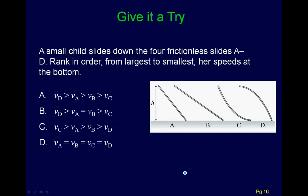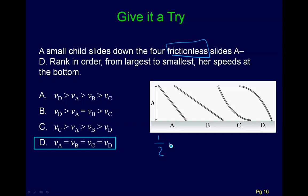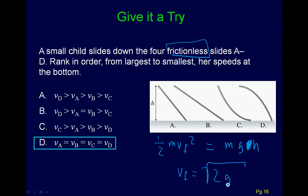Here's a try-it problem: someone slides down four different frictionless slides. Rank their speeds at the bottom from largest to smallest. This is a trick question. Since all slides are frictionless, only gravity acts on the person. Conserving mechanical energy, the final kinetic energy one-half mv_final squared equals the initial gravitational potential mgh. Just like the Yogi Bear example, the answer is v equals the square root of 2gh. It doesn't matter what path they took — the speed at the bottom is the same for all four. That's one of the powerful things about conservation of mechanical energy.